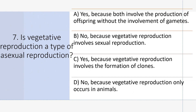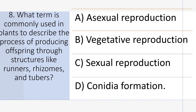Is vegetative reproduction a type of asexual reproduction? Answer A: Yes, because both involve the production of offspring without the involvement of gametes. What term is commonly used in plants to describe the process of producing offspring through structures like runners, rhizomes, and tubers?